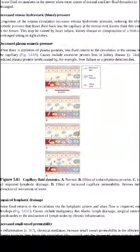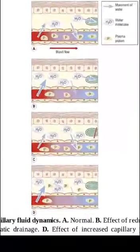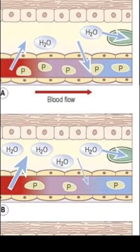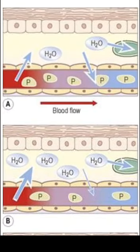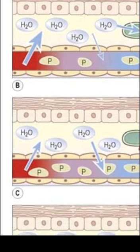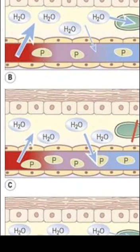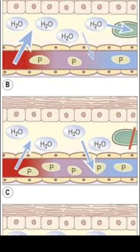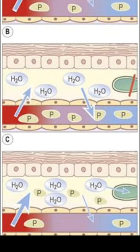In diagrams A and B, some water is also regulated by passing into the lymphatic region. However, in diagram C, if the lymphatic system is damaged — due to carcinoma, or removal of lymph nodes — water molecules cannot pass into the lymphatic region, leading again to accumulation of fluid in the tissue space and edema.